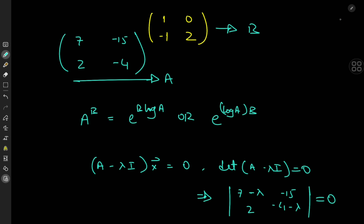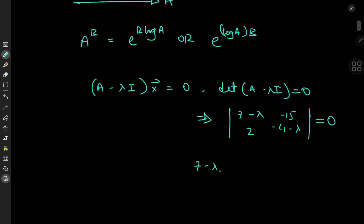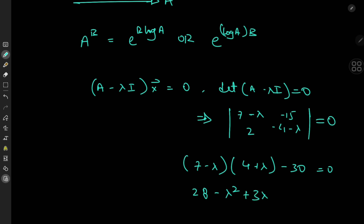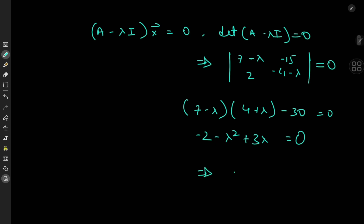Expanding the determinant gives us (7−λ)(4+λ) + 30 = 0, which simplifies to a quadratic. Working it out we have −λ² + 3λ − 2 = 0, which factors to give eigenvalues λ = 1 or λ = 2.